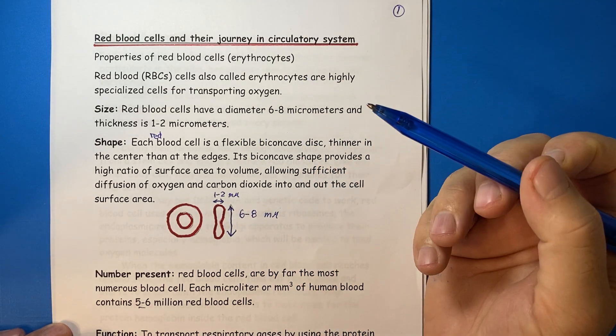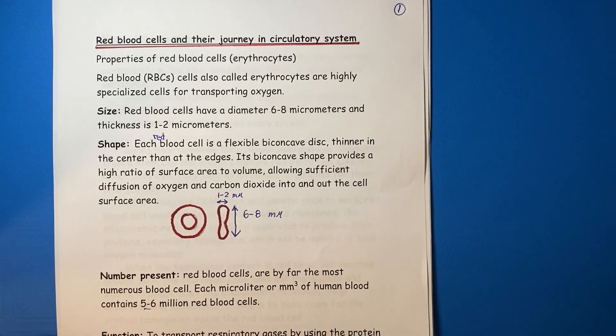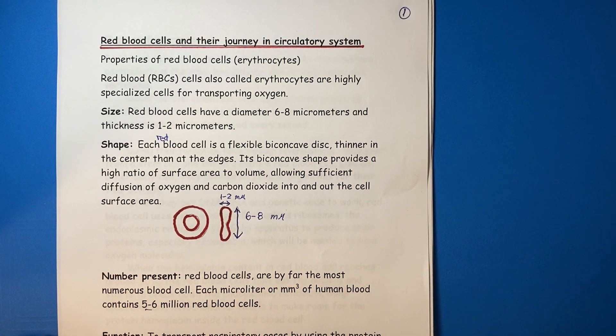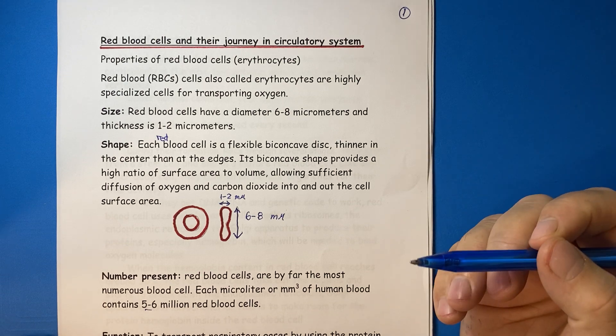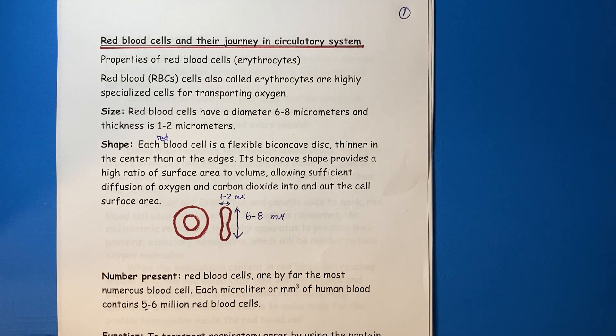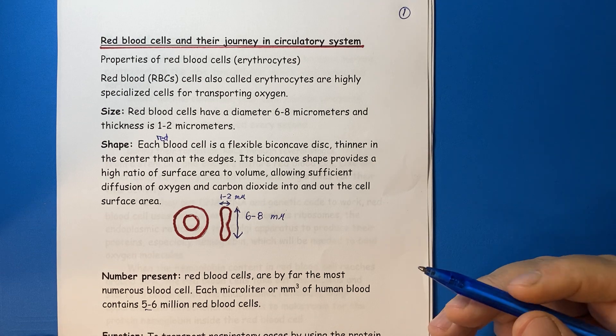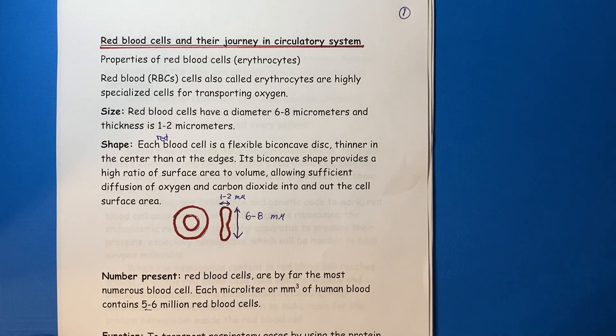Red blood cells and their journey in the circulatory system. Red blood cells are also called erythrocytes, and they are highly specialized cells for transporting oxygen.